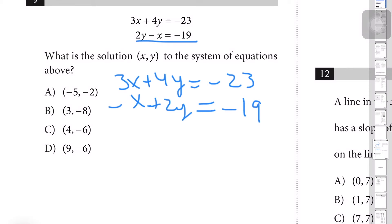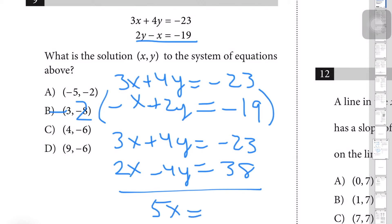Now to knock out the 4y, I'm going to multiply this whole thing by -2 so that I get 3x + 4y = -23, and then I'm also going to multiply it by the -2, so it just becomes 2x - 4y, and then -2 times -19 is 38. So I get 5x = 15, x equals 3.